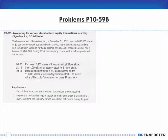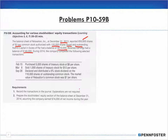We're working on problem 10-59, accounting for various stockholders equity transactions. The balance sheet of Relaxation on December 31st, 2013 reported 650,000 shares of $2 par common stock authorized, 120,000 shares issued and outstanding, paid-in capital in excess of par of $310,000, and retained earnings of $140,000. During 2014 the company completed the following transactions: record the transactions in the journal, then prepare the stockholders equity section of the balance sheet at December 31st, assuming the company earned $74,000 of net income.